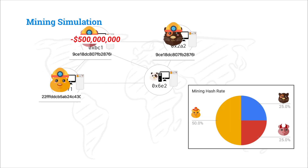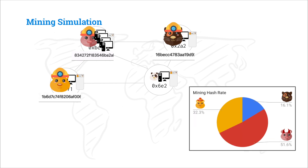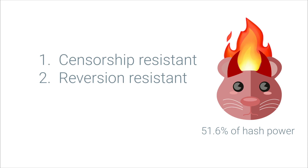What's preventing Mallory from just spending a bunch of money and buying a bunch of bulky hardware that can compute hashes really, really fast? Suddenly Mallory is computing hashes way faster than everyone else, and now she has over 50% of the mining hash rate. If Mallory now has a majority of the hash power, she can decide to censor certain users, and she can also revert history at will.